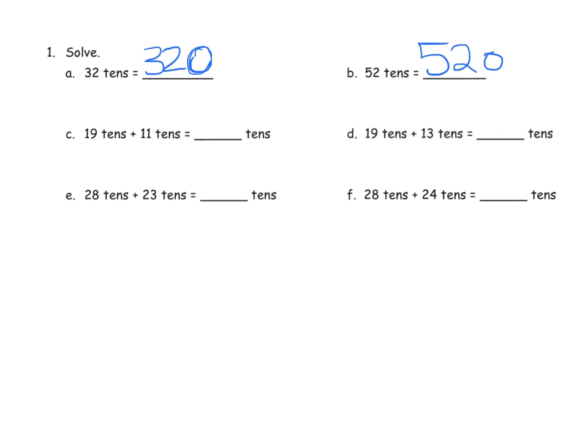Where they can add 19 tens and 11 tens in their head. And the way they're going to do that is they're going to start with the idea of saying, well, 11 is 1 plus 10. And then 19 plus 1 is 20, plus that extra 10 right here gives us 30 tens.